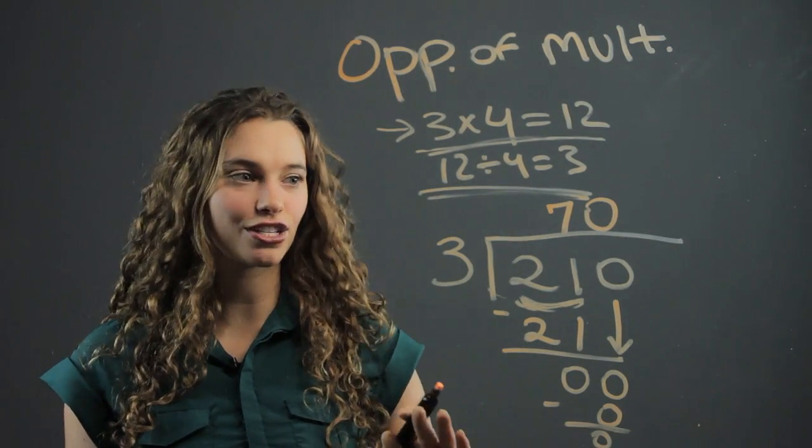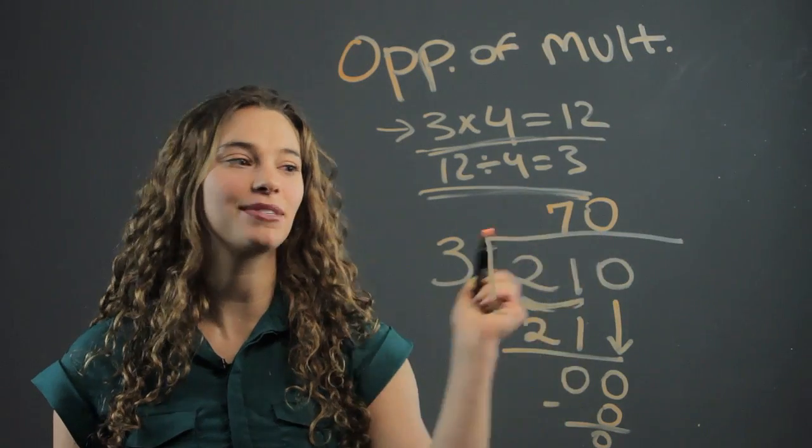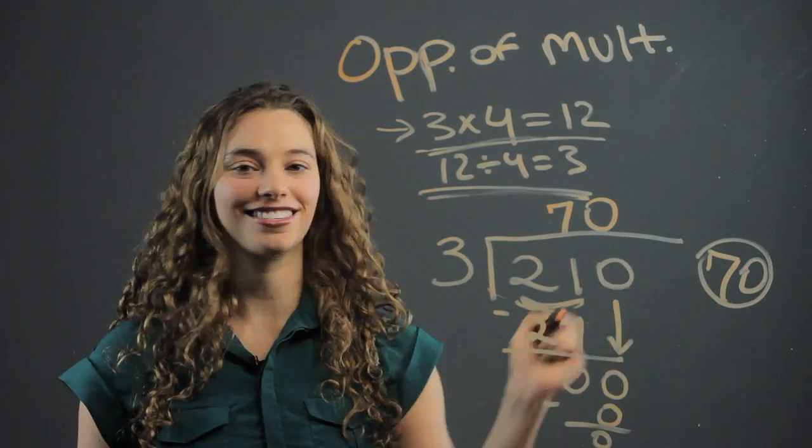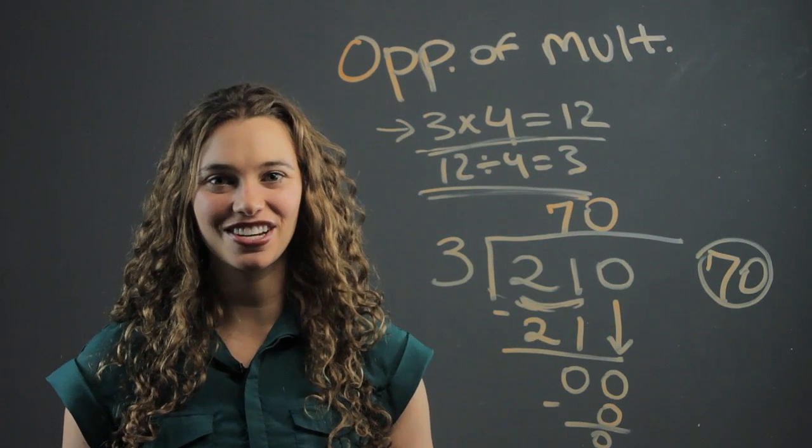And so we know we've finished the problem. So three goes into two hundred and ten seventy times, and seventy is going to be our answer from this division problem. I'm Rachel, and thank you very much for learning with me today.